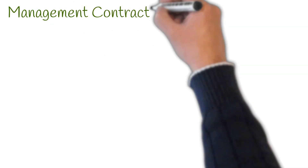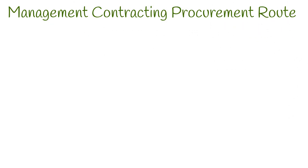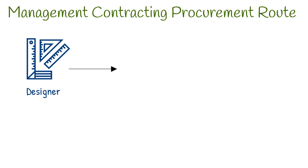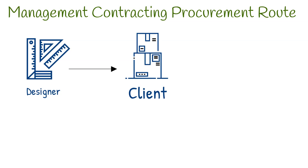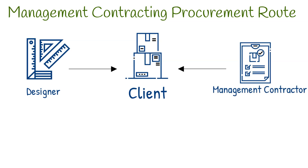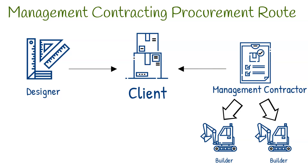Moving on, we have management contracting. Similarly to traditional route, the design is carried out by a professional team appointed by the employer. However, under management contracting, the employer also appoints a management contractor to manage the construction works. The management contractor does not carry out any of the works themselves; however, they engage a series of subcontractors who they manage and coordinate. They are paid an agreed fee and reimbursed for the cost incurred to manage the subcontractors.